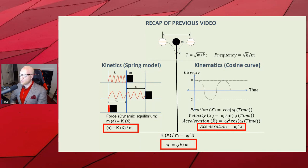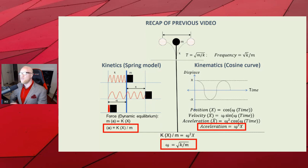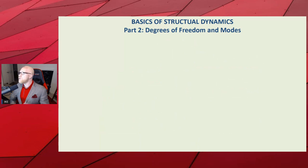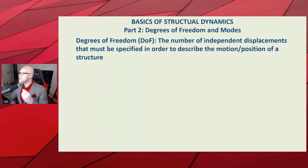Today's video is going to be more qualitative. The question that faces us is: okay, we have one degree of freedom, we have a spring model, we can come up with the natural frequency and natural period of an object knowing its stiffness and mass — but how about something more complicated? That's where degrees of freedom comes in.